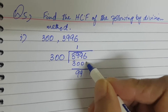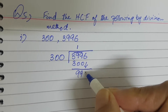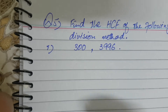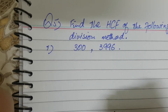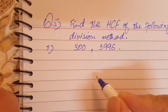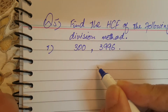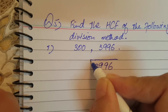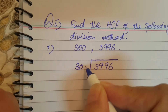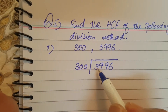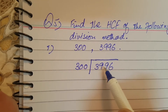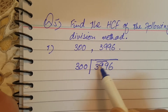Question number five, exercise 4A: find the HCF by division method. Two numbers are given. Before we did factorization, now we will do the long division method to find out the highest common factor. We will put the greater number inside as the dividend and the smaller number will be our divisor. The numbers are 3996 and 300.